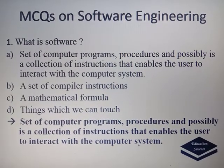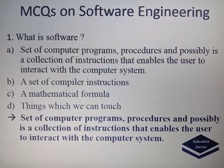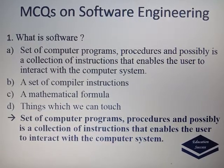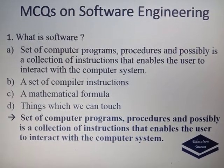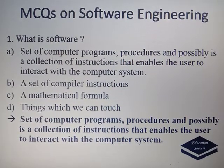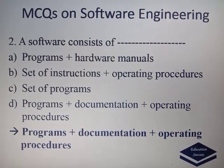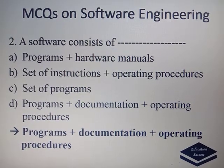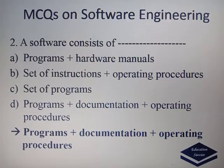What is Software? A software is a set of programs, procedures, and collection of instructions that enable the user to interact with computer systems. Hence the correct answer is option 1. A software consists of programs, documentation, and operating procedures. Hence the correct option is 4th.